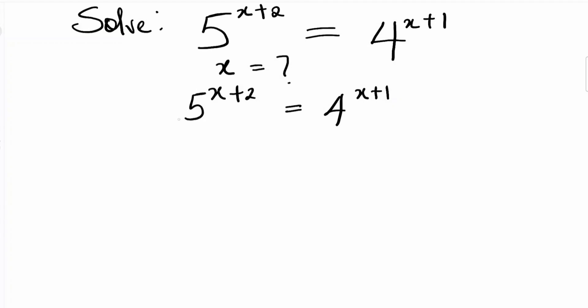If you observe, 5 is the base and 4 is also the base on the other side, and they also have different powers. So since the base 5 and 4 cannot be expressed in a common base, all we have to do here is just to take the logarithm of both sides.